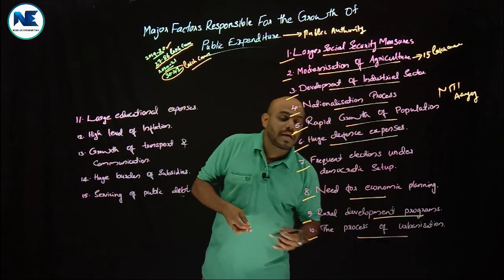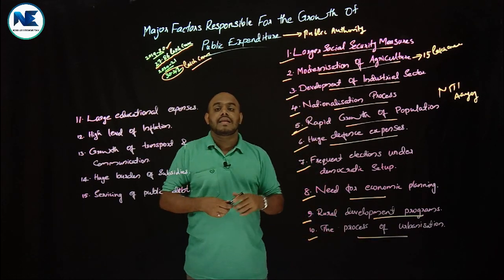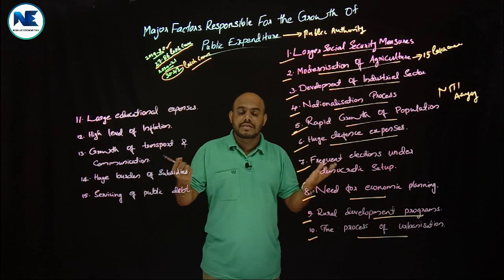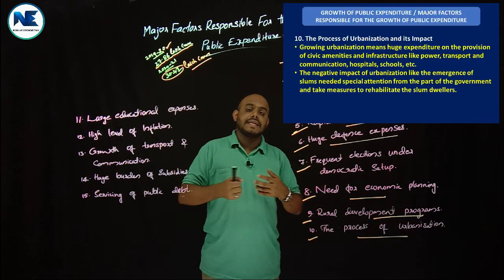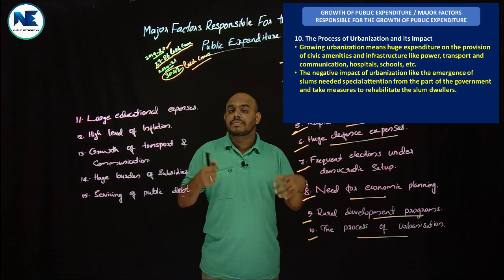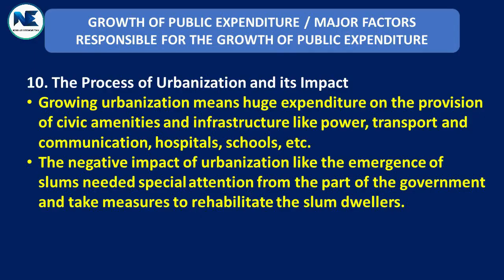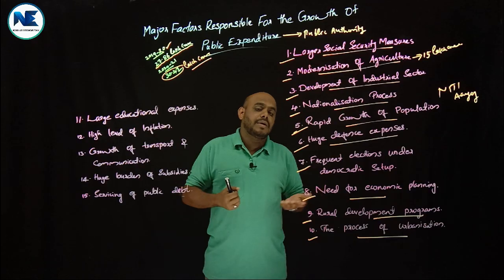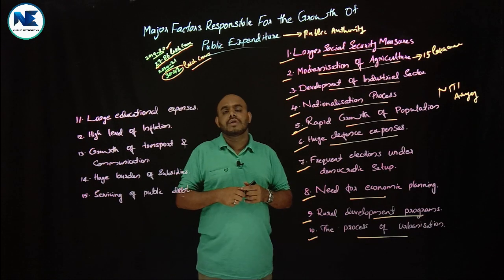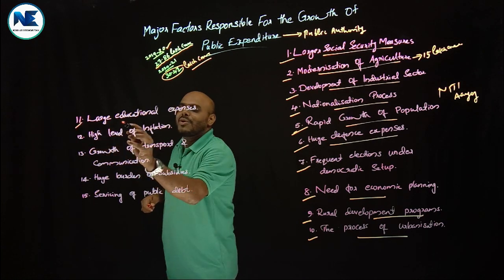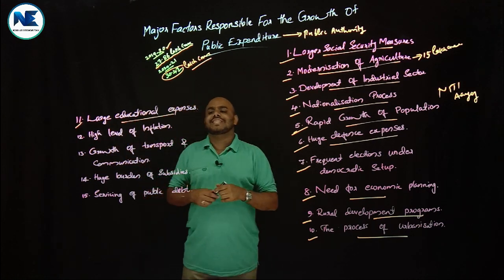The tenth point is the process of urbanization. The process of urbanization and the resulting living expenditure require the government to spend a huge amount. The eleventh point is large educational expenses. Imparting quality education is very important for human capital formation.